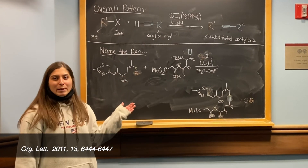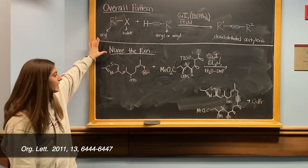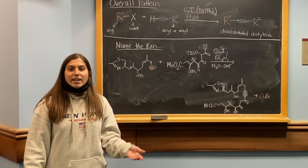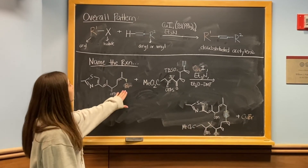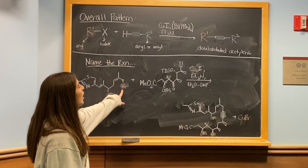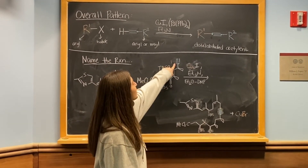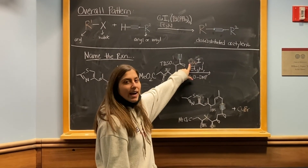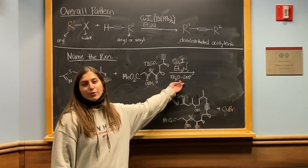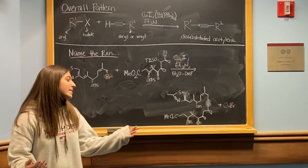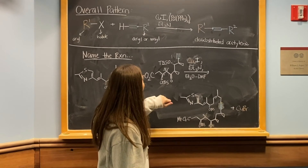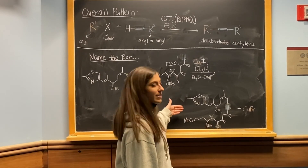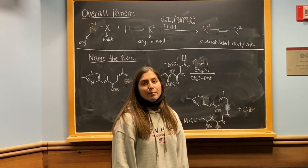Here's a practice problem: predict whether this is going to be a Castro-Stevens reaction or a Sonogashira reaction and why. This is going to be a Castro-Stevens reaction. We have a vinyl halide — a bromine — and a terminal alkyne. In the reaction conditions we have copper(I) iodide as our copper(I) catalyst, and there is no palladium present, which is another reason we can deduce this is a Castro-Stevens reaction. The terminal alkyne forms a new bond where the bromine once was, giving the overall coupled product, and we get copper(I) bromide as a byproduct.